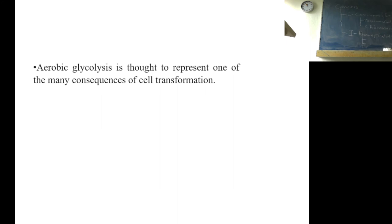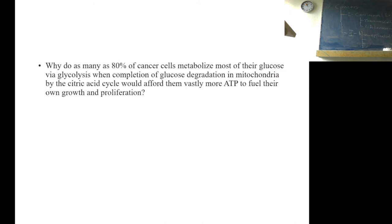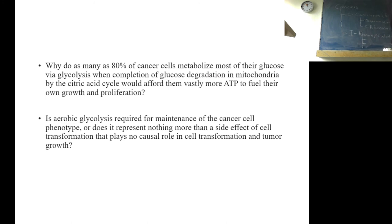Aerobic glycolysis is thought to represent one of the many consequences of cell transformation. Aerobic glycolysis, sometimes called Warburg effect, remains a subject of much contention as its rationale in cancer cell biology has never been fully resolved. Why do as many as 80% of cancer cells metabolize most of their glucose via glycolysis? When completion of glucose degradation in mitochondria by the citric acid cycle would afford them vast more ATP to fuel their own growth and proliferation?